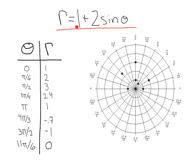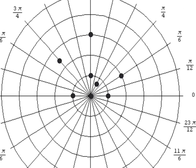Last example: r equals 1 plus 2 sine theta. Again, filled out the chart and plotted our points. We've got (0, 1), (π/6, 2), (π/2, 3), (3π/4, 2.4), (π, 1), (4π/3, negative 0.7), (3π/2, negative 1), and (11π/6, 0) right at the origin. Let's zoom in and see what we notice here.